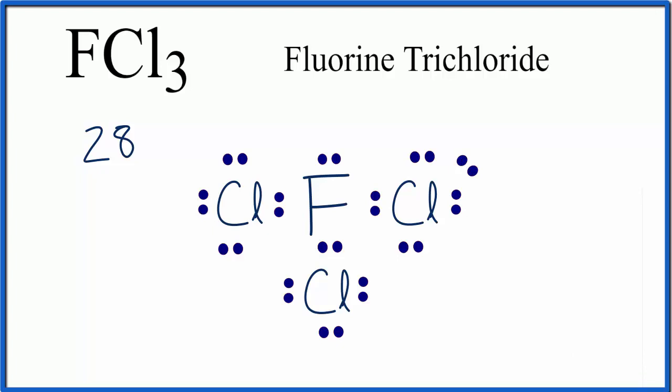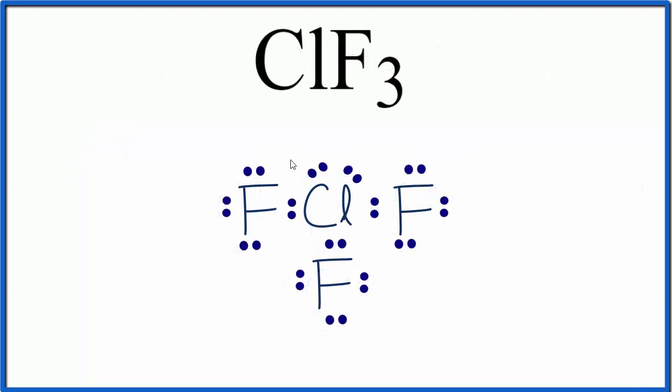ClF3 is a pretty common Lewis structure. This works well because we have this chlorine, which is in period 3, it can have an expanded octet. And we can put our extra electrons right on the chlorine in the middle, and that works out well. Our fluorines are on the outside, so ClF3, that would make sense. That could be the Lewis structure you're supposed to be doing.